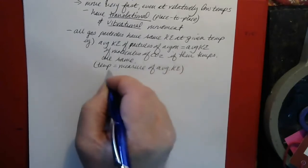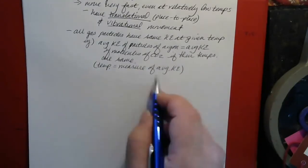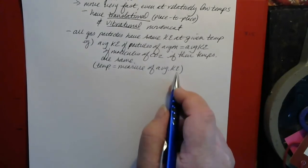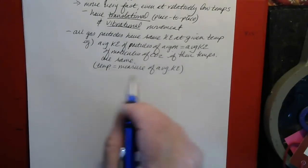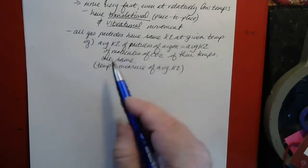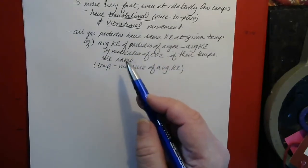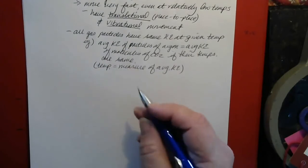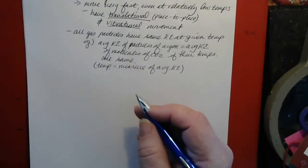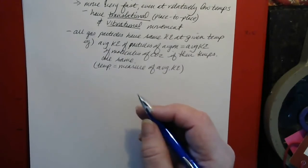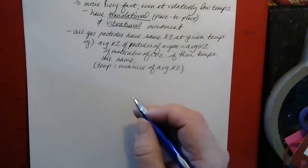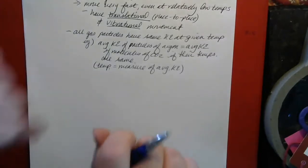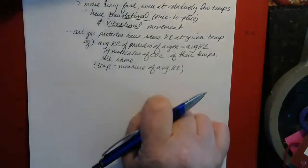If you remember back to our definition of what temperature is: temperature is a measurement of the average kinetic energy of the particles in a sample. So this definition is actually kind of circular — if the measurement of the average kinetic energy is the same, then the average kinetic energy is going to be the same. It's an aspect we probably wouldn't have thought of if it wasn't stated explicitly. So if two gas samples have the same temperature, they have the same average kinetic energy.